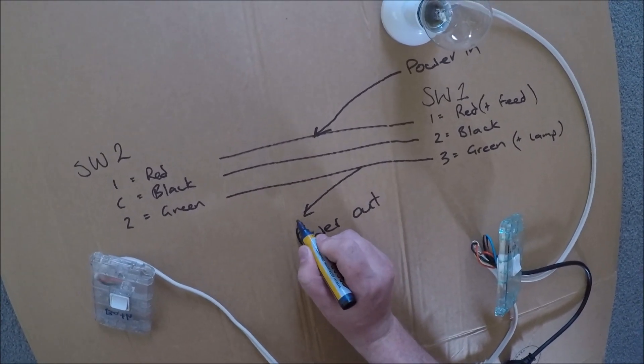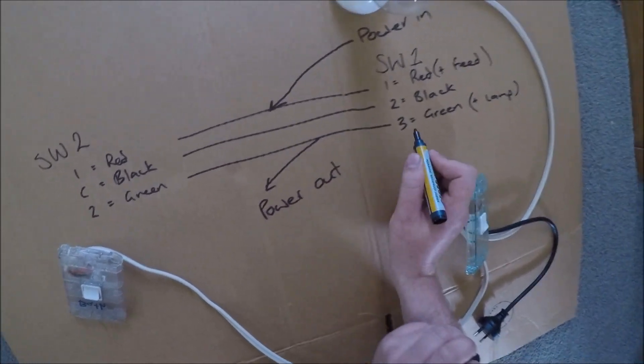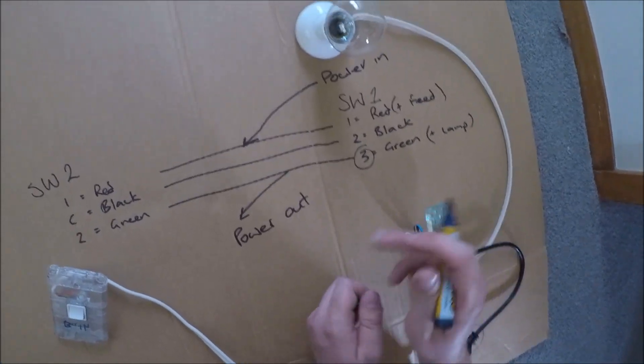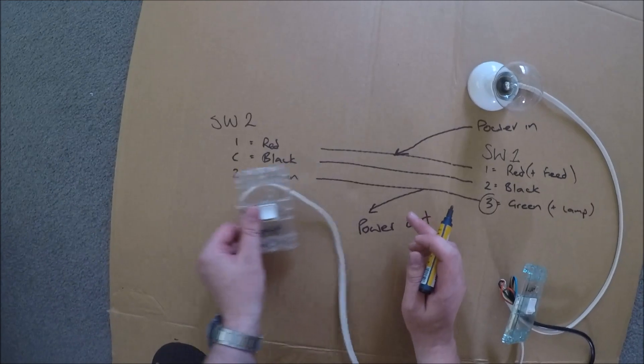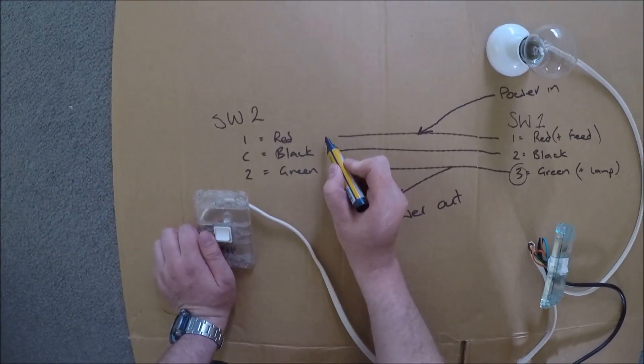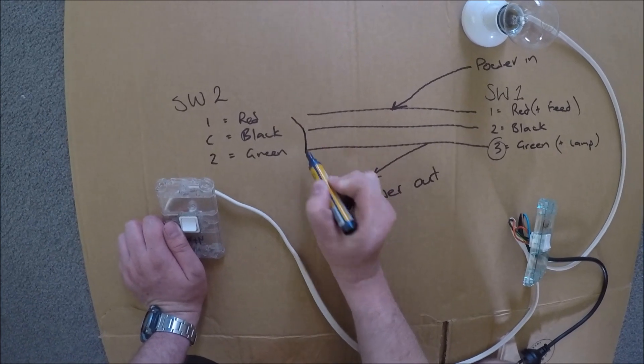So if this is live here, if number three is live, then your lamp will work. Because these are two-position switches, one side's either off and one side's on.